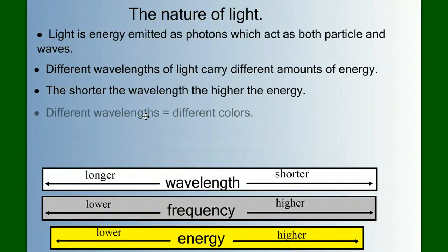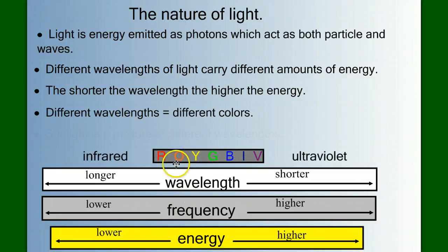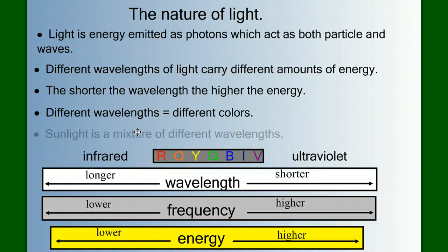We also know that different wavelengths of light equal different colors. When we look across the electromagnetic spectrum, visible light goes from the reds to the violets — Roy G. Biv may be familiar to you. Sunlight is a mixture of these different wavelengths. Ultimately, it's light that's going to be the driving force to add energy into our system. The chemical bonds of glucose have high energy because they represent the absorbed energy of light.